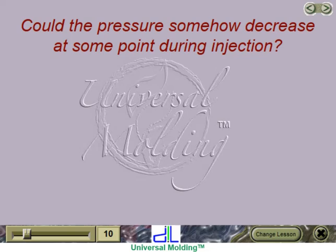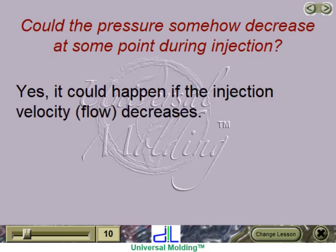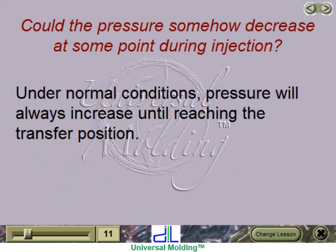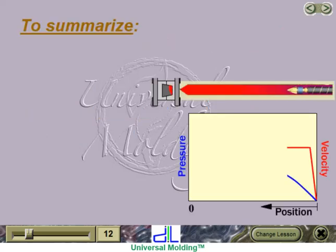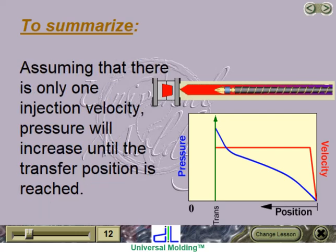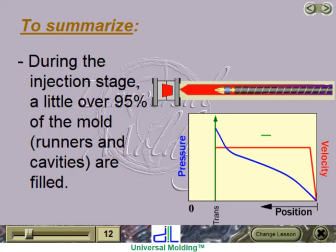Could the pressure somehow decrease at some point during injection? Yes, it could happen if the injection velocity or flow decreases. It was previously established that universal molders use one single velocity, with very few exceptions. Under normal conditions, pressure will always increase until reaching the transfer position. Pressure is the result of the resistance to flow — the more melt that enters the mold, the bigger that resistance. Assuming only one injection velocity, pressure will increase until the transfer position is reached. During the injection stage, a little over 95% of the mold, runners, and cavities are filled.